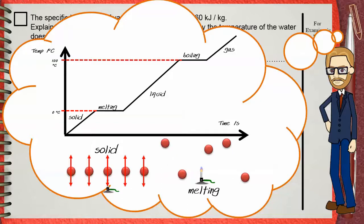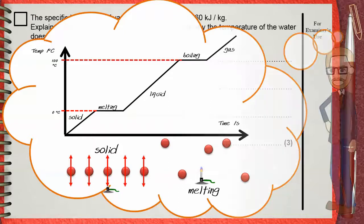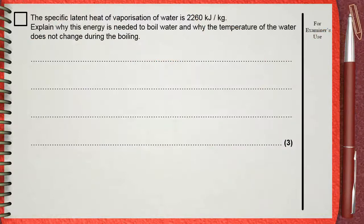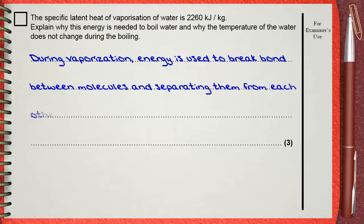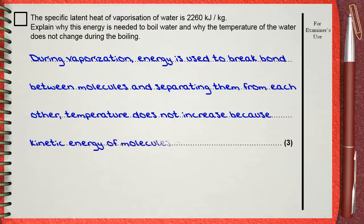This is what happens in melting, and the same applies in boiling or vaporization. During vaporization, energy is used to break bonds between molecules and separate them from each other. Temperature does not increase because the kinetic energy of molecules does not increase and remains unchanged.